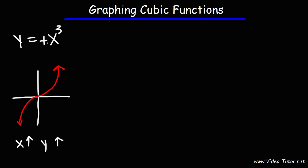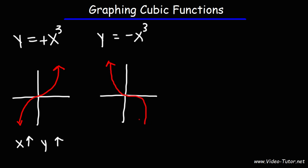This is the case when we have a positive sign in front of x cubed. If we put a negative sign in front of x cubed, the graph is going to reflect over the x-axis, which for this specific example is equivalent to reflecting over the origin. So with a negative sign, the function is always decreasing — as x increases, y decreases.